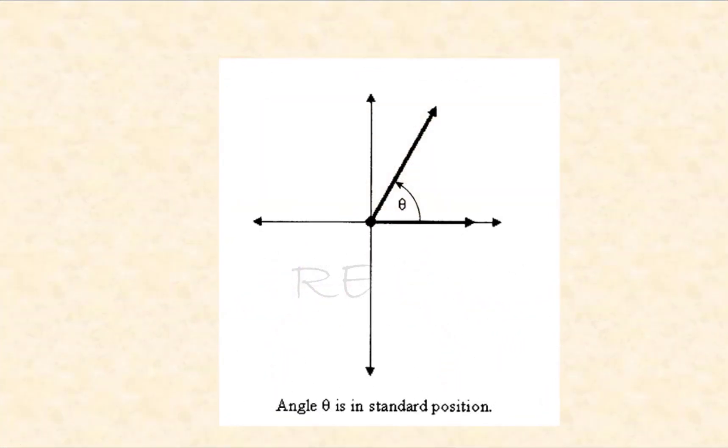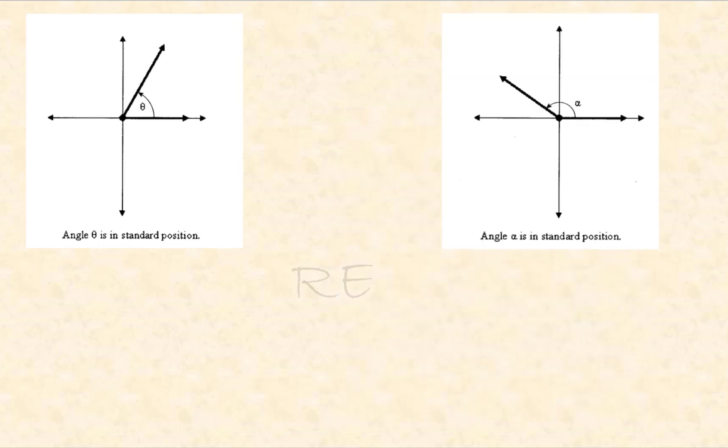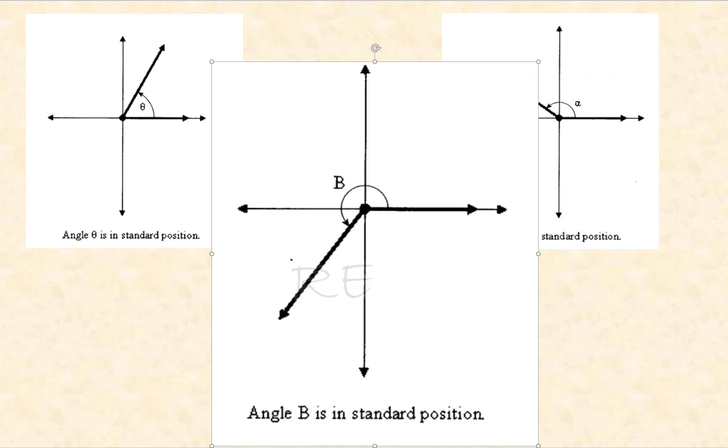Here's an example of an acute angle in standard position. Acute angles are less than 90 but greater than zero degrees. This is an example of an obtuse angle in standard position. Obtuse angles are between 180 and 90 degrees.